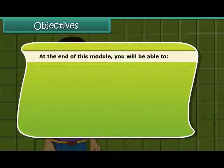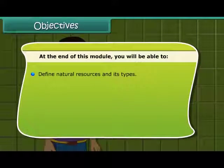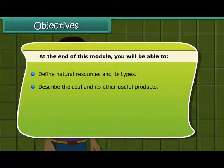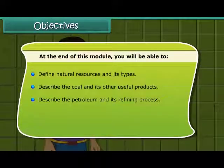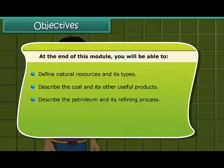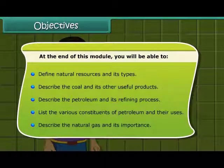At the end of this module, you will be able to: define natural resources and its types; describe coal and its other useful products; describe petroleum and its refining process; list the various constituents of petroleum and their uses; and describe natural gas and its importance.